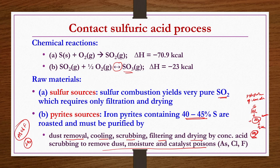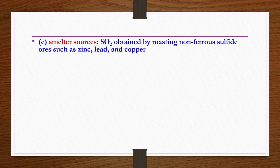Pyrites are thus a source of sulphur dioxide which can be further oxidized to produce sulphuric acid. Similarly, SO2 obtained by roasting non-ferrous sulphide ores — such as zinc, lead, and copper — also requires proper purification before use in the contact process, as has been done in the case of iron pyrites.